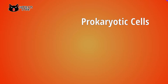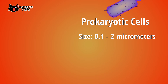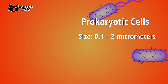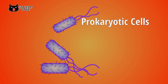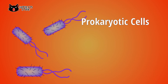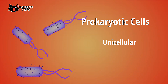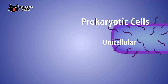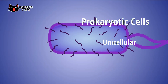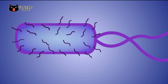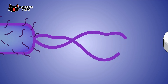Prokaryotic cells are small cells that range from 0.1 to 2 micrometers. They have no true nucleus and membrane-bound organelles are absent. Organisms based on prokaryotic cells are unicellular organisms — made up of only one cell that carries out all of the functions needed by the organism. Examples are bacteria and archaea.